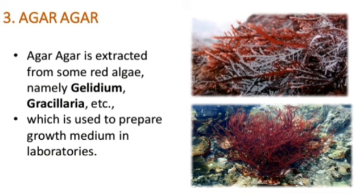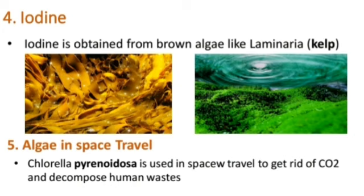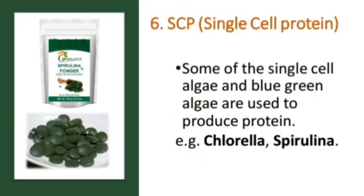The growth medium in a laboratory is a plate where small spots of agar-agar are placed to prepare cultures. Iodine is obtained from brown algae like Laminaria. In space travel, Chlorella pyrenoidosa is used to get rid of carbon dioxide and decompose human wastes. Finally, single cell protein (SCP): some single-cell algae or blue-green algae are used to produce protein - examples are Chlorella and Spirulina.